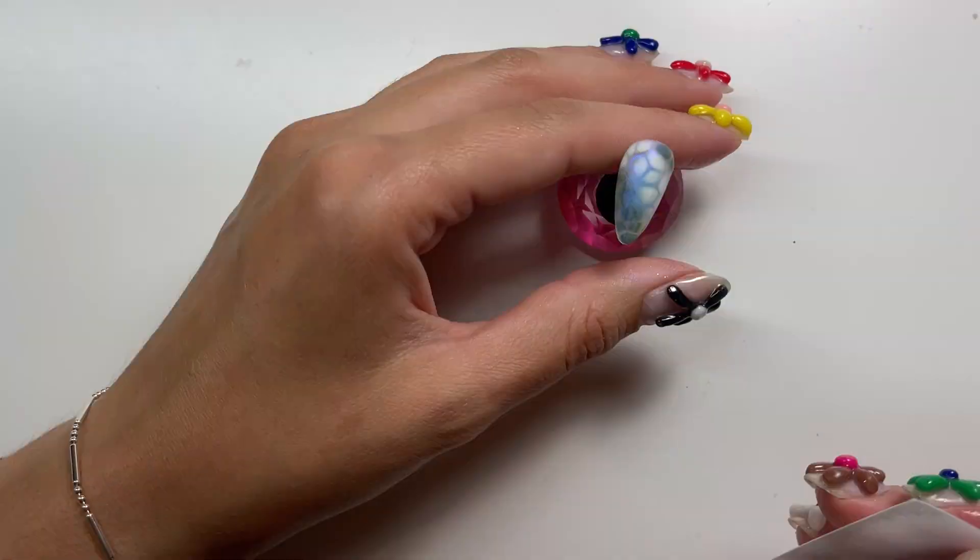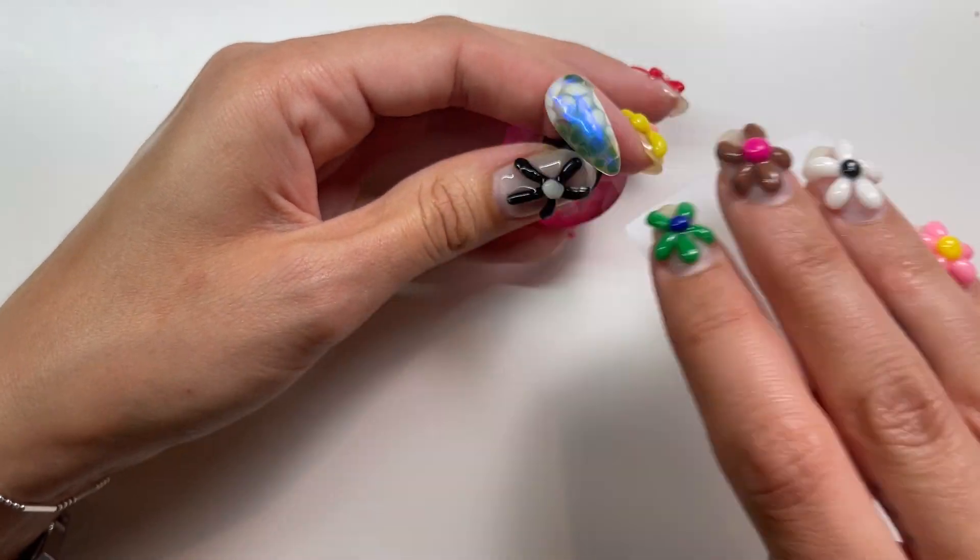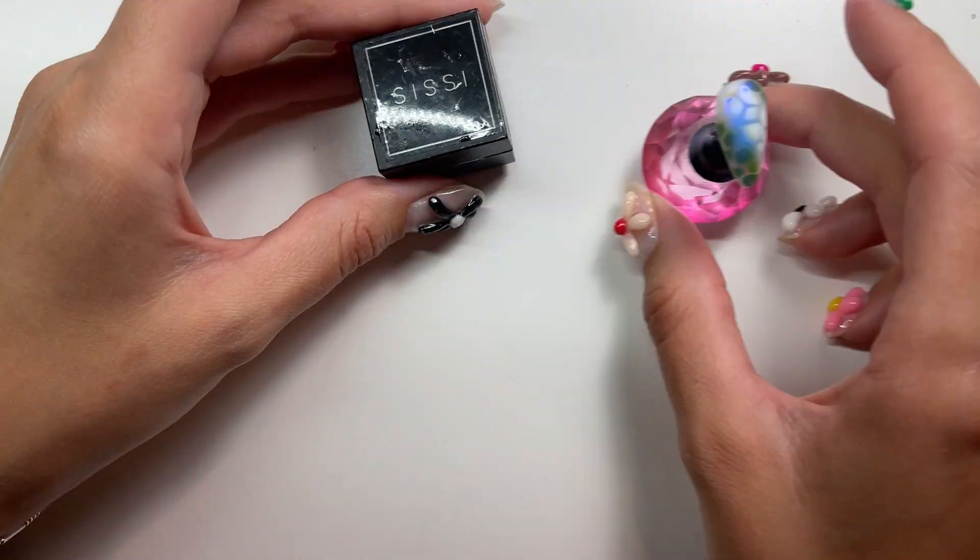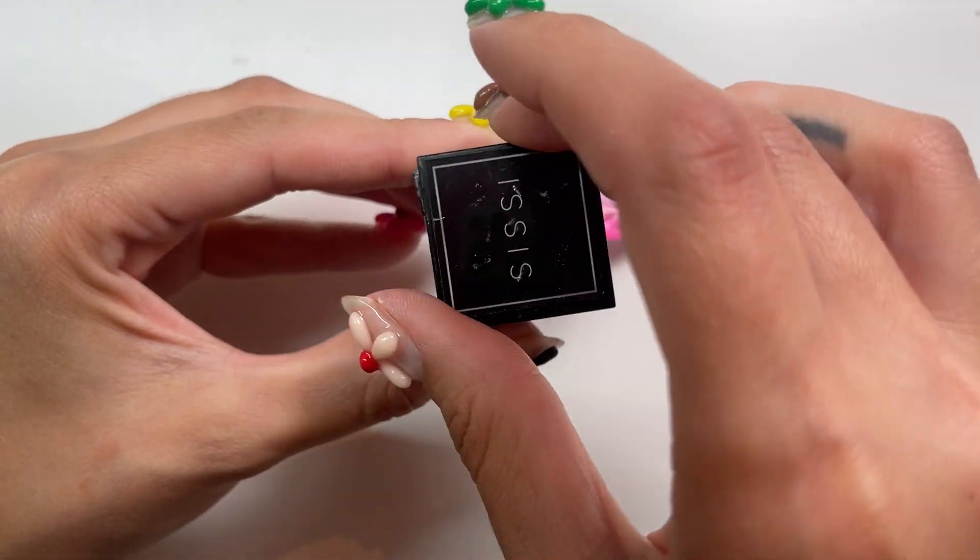And then I'm going in with a buffer, very lightly buffing the surface of the top coat, and I'm wiping that off and then going in with the Sissy chrome gel. This is my favorite chrome gel.